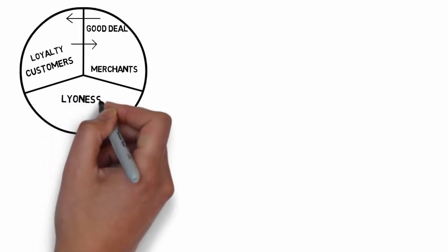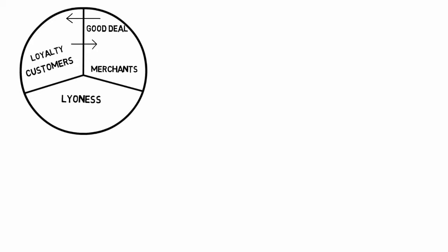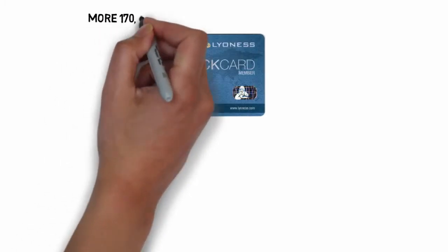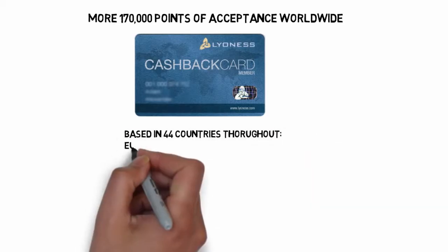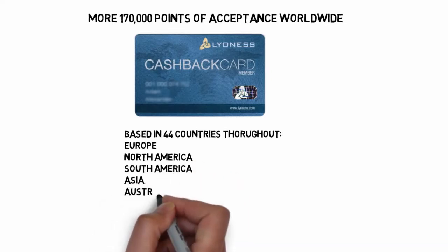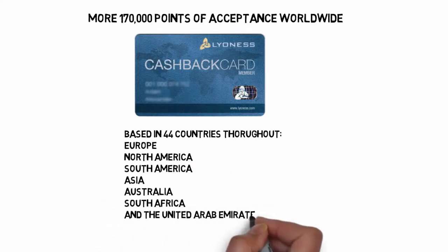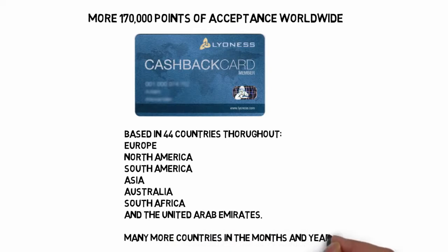More than 10 years ago, an Austrian man by the name of Hubert Freidel founded a company called Lyoness. His vision was to create the perfect solution for both customer and the merchant. You see, people don't like to collect points, butterflies, hearts, or anything else. People like to get cashback. Hubert said, if this is going to benefit anyone, the benefit has to offer cashback with every purchase. With that, he created the Blue Lyoness Cashback Card, which is now accepted at more than 170,000 points of sale in 44 countries throughout Europe, North America, South America, Asia, Australia, South Africa, and the United Arab Emirates. With many more countries being added in the months and years ahead. The goal is to share Lyoness with as many countries as possible.